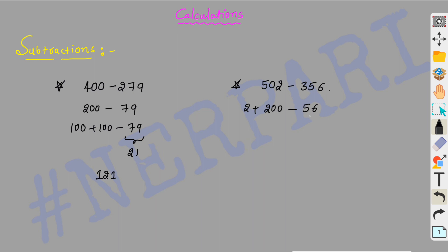We can choose 144. I left 121 and 56. So 144 plus 2 is 146. Okay, like this we get the answer.